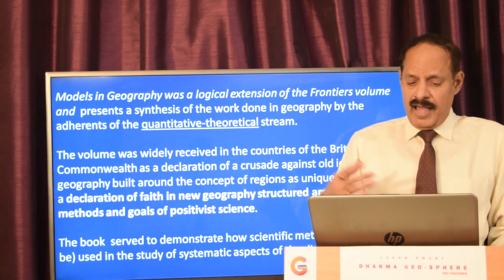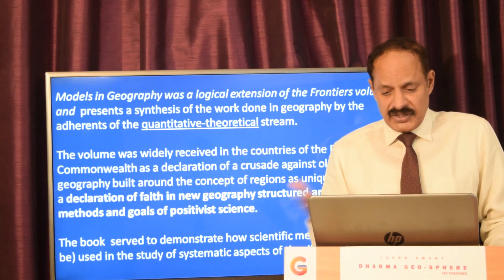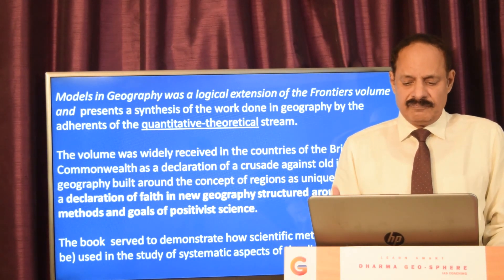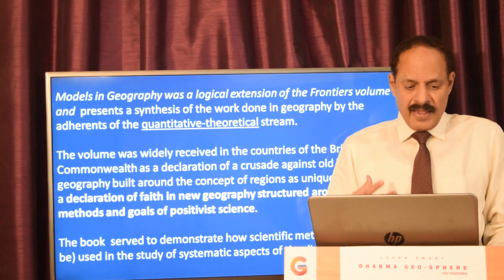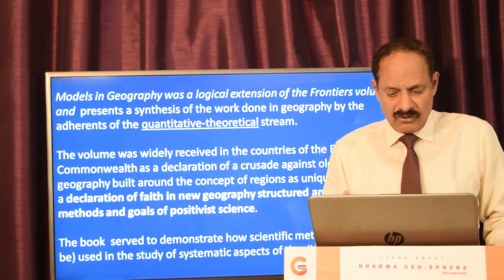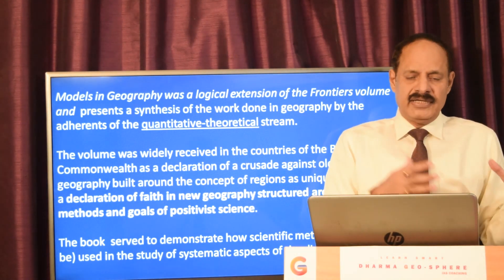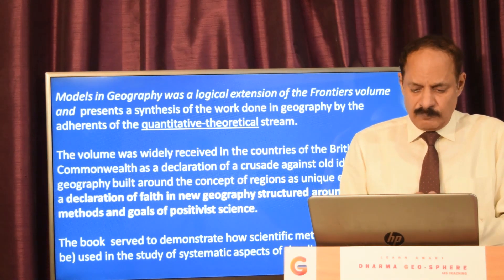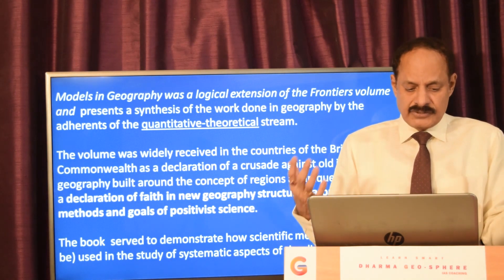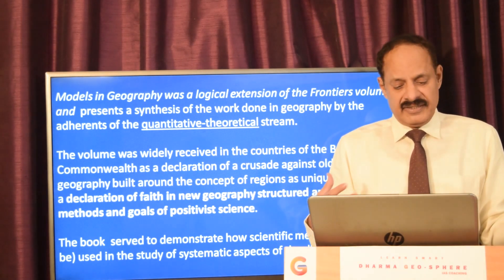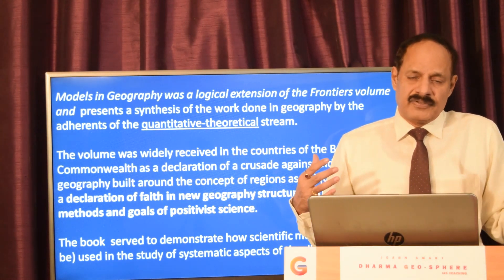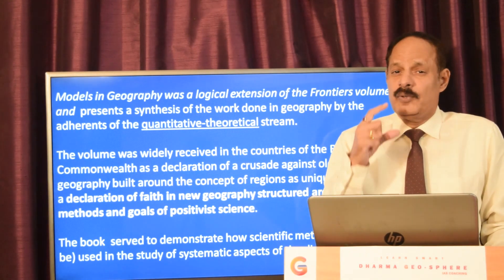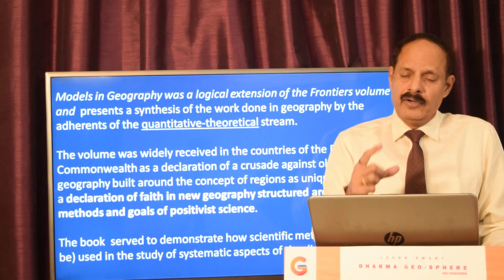The second book, 'Models in Geography,' was a logical extension of the Frontiers volume. It presented a synthesis of work done by the adherents of the quantitative-theoretical paradigm group. The volume was widely received in the British Commonwealth, both as a declaration of crusade against the old ideographic geography built around regions as unique entities, and as a declaration of faith in a new geography structured around the methods and goals of positivist science. The book demonstrated how scientific methods could be used in the study of systematic aspects of the discipline.